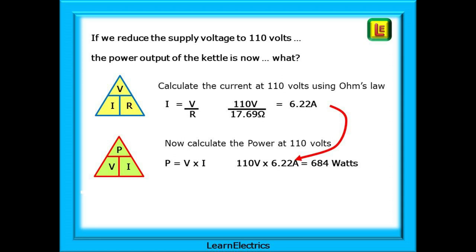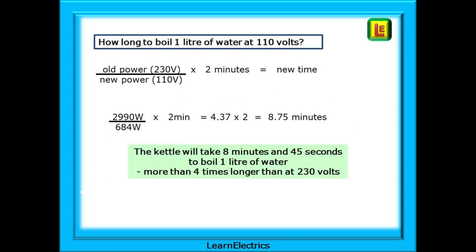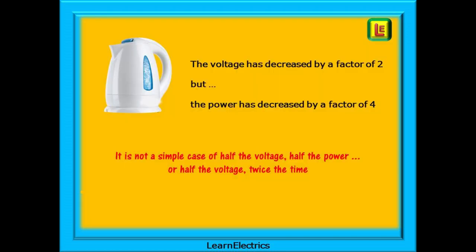To find the new boiling time, divide the original 230 volt power by the new 110 volt power and multiply by two minutes: 2,990 watts divided by 684 watts, multiplied by 2, gives approximately 8.75 minutes — that's 8 minutes and 45 seconds to boil one liter of water. This is more than four times longer than at 230 volts. The voltage decreased by a factor of two, but the power decreased by a factor of four.